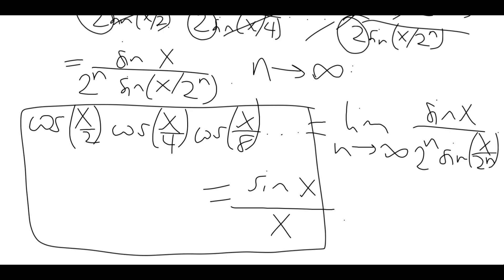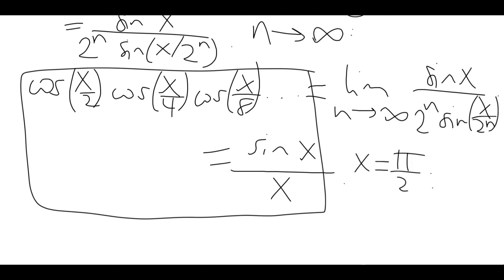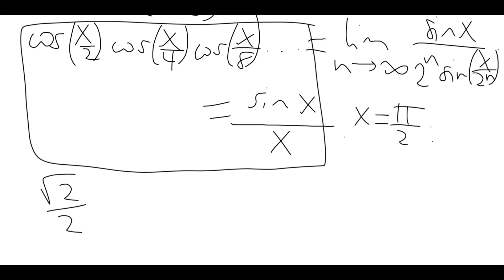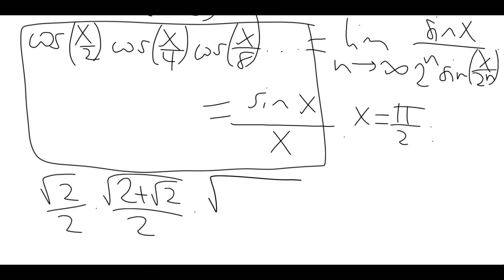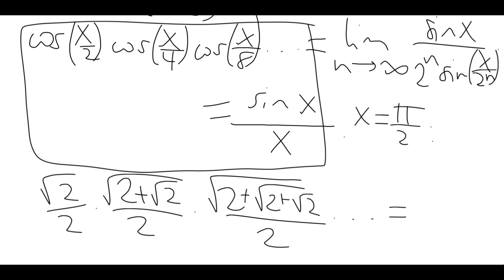To get Viète's product, we simply let x equal pi over 2. Cosine of pi over 4 is root 2 over 2. Cosine of pi over 8, using a half-angle formula, is the same thing but with an extra root 2, and so on. On the other side, we have sine of pi over 2, which is 1, and pi over 2 in the denominator, so that's 2 over pi.